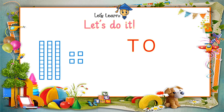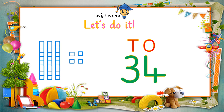Let's find out how to write a number by counting the number of given blocks. First we are going to count the blocks representing ones: 1, 2, 3, 4. There are four ones boxes. Now let's count how many blocks of tens are there: 1, 2, 3. So write 3 in the tens box. So how many blocks are there altogether? There are 34.